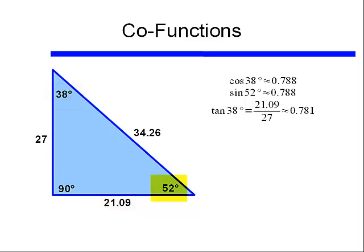And if we look at the cotangent of 52 degrees, we find that is also equal to 21.09 divided by 27. That is, the cotangent equals the adjacent side divided by the opposite side. So tangent of 38 degrees equals the cotangent of 52 degrees.